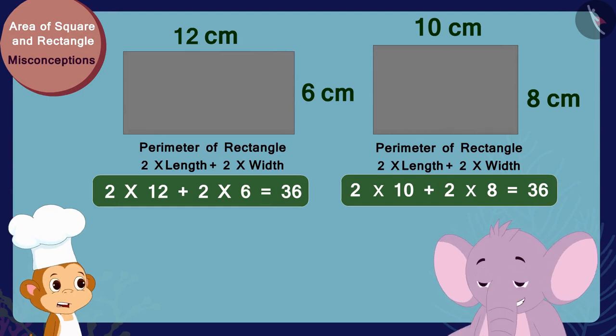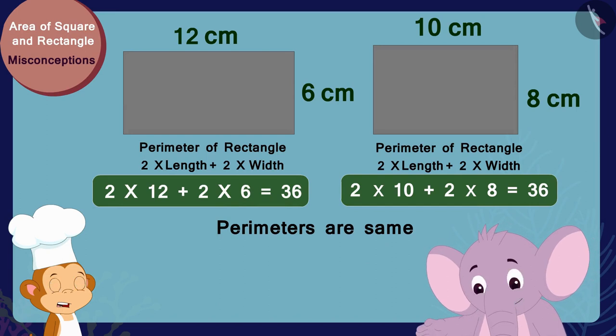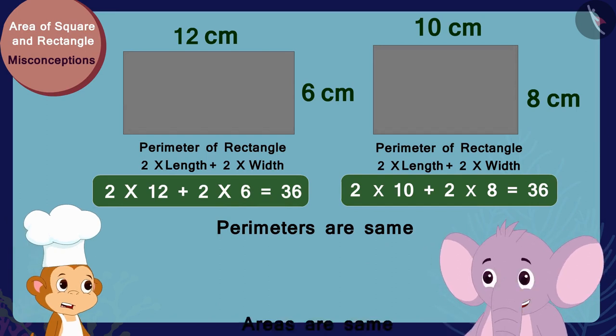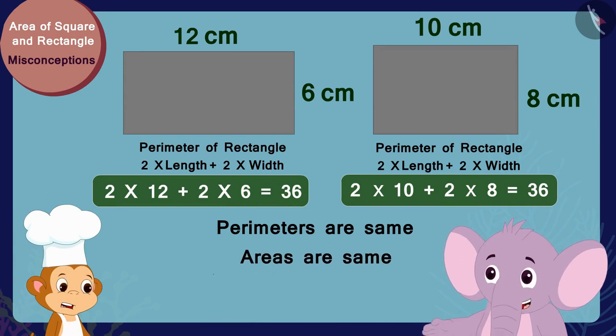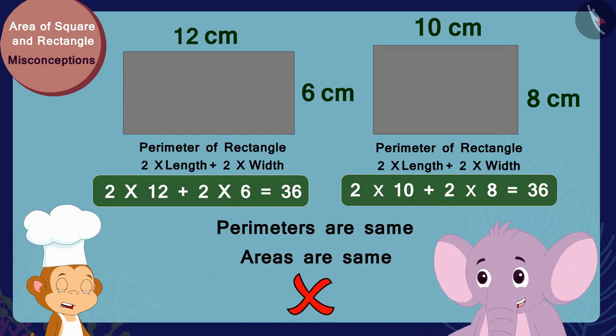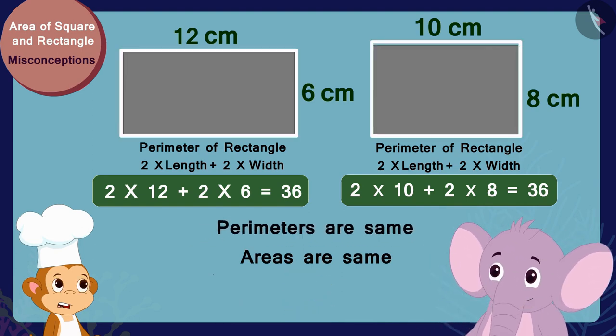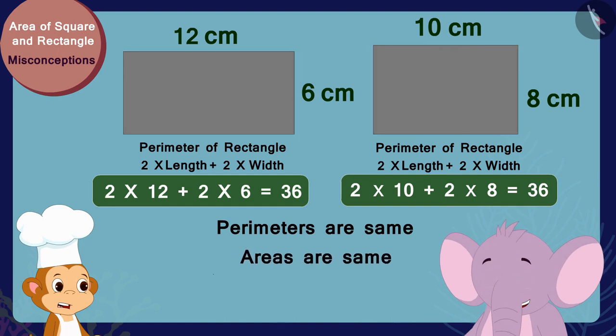Babban, it is not necessary that the areas of two rectangles having equal perimeters would also be the same. So it is not necessary that because the perimeters of these two trays are the same, their areas will also be the same.